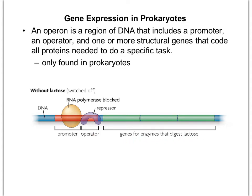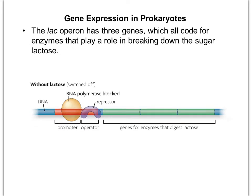Operons are only found in prokaryotes because this is a relatively simple way to regulate gene expression, and prokaryotes are very simple creatures. The first operon we're going to look at is called the lac operon — lac stands for lactose. The three genes in this operon code for enzymes that digest lactose.